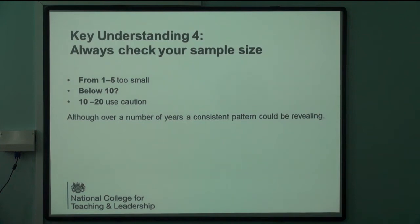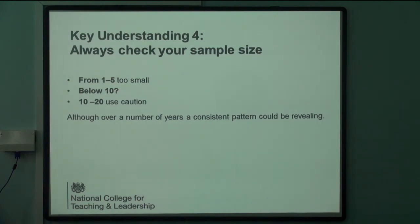Always check the sample size. Ofsted inspectors won't pay any attention to groups between one and five children, and I would say anything below 20 as a group size in a cohort is fairly small. You can't read into the achievement of children from ethnic minorities if there's only 12 or 13 in a year group, with various other factors at work. However, over a number of years, if there's a consistent pattern with those smaller groups, then it might be something to consider. With the smaller groups of both the infants and juniors here, there isn't a consistent pattern.